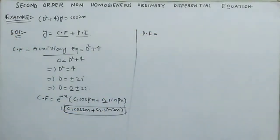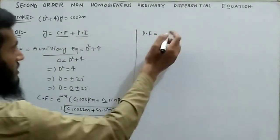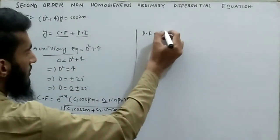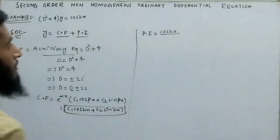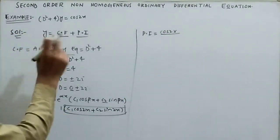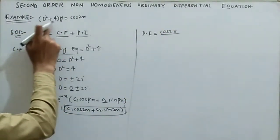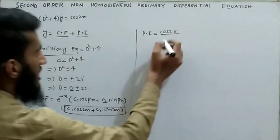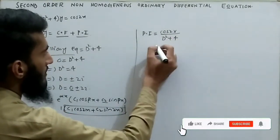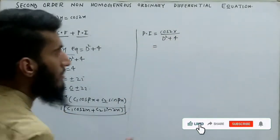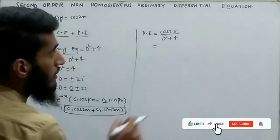Now finding the particular integral. The particular integral is equal to the right-hand side of the non-homogeneous equation, which is cos(2x), divided by f(D), where f(D) is the coefficient of y, which is D² + 4.